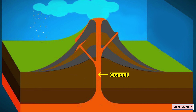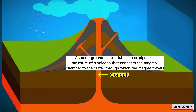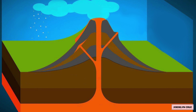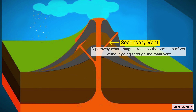The conduit is an underground central tube-like or pipe-like structure of a volcano that connects the magma chamber to the crater, through which the magma travels. A secondary vent is a pathway where magma reaches the Earth's surface without going through the main vent.